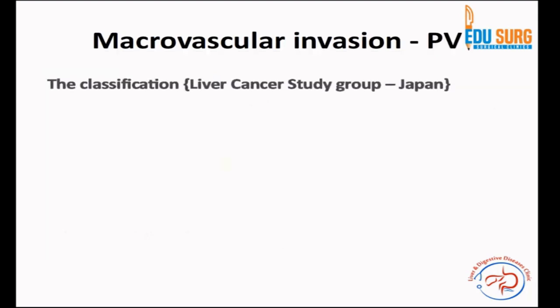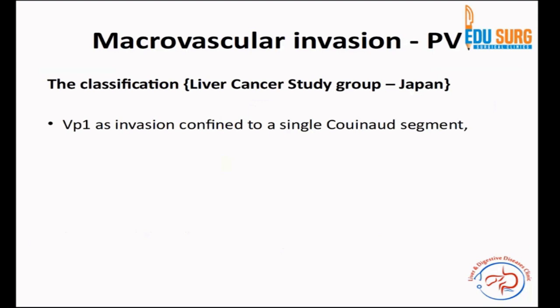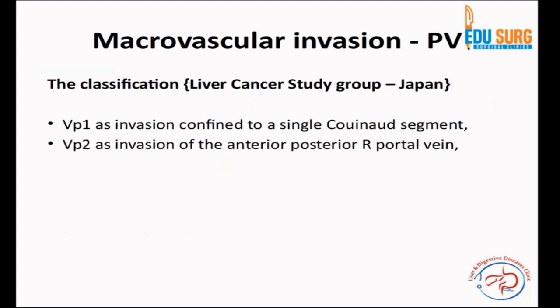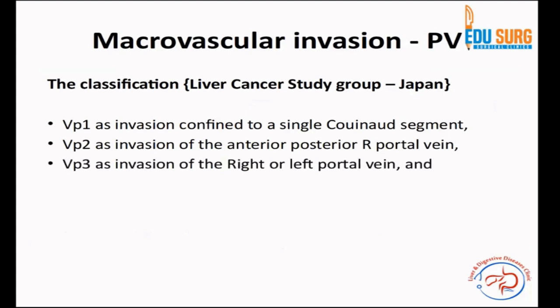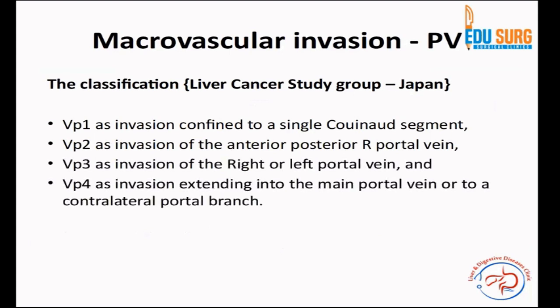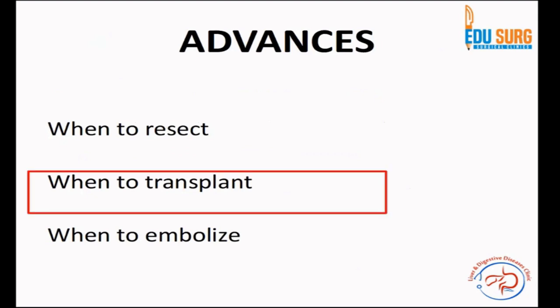The Liver Cancer Study Group of Japan has provided a portal vein invasion classification going from segment to hilum — from a single sub-segmental node going into the sectoral vein, then into the main portal vein, and then into the hilum. As per the Hong Kong classification of liver cancer staging, you can operate up to venous invasion grade 3 — ipsilateral main venous invasion is acceptable — but if the main portal vein or contralateral branch is involved, these patients should not be selected for resection, and as per BCLC, they should not be resected either.